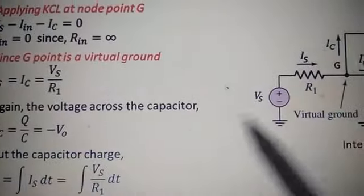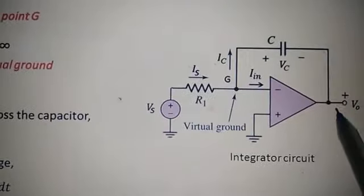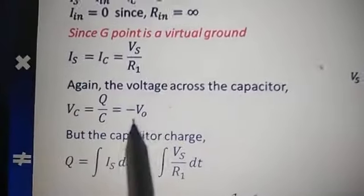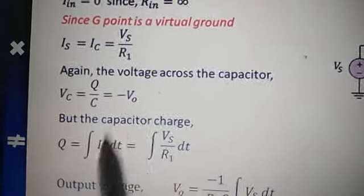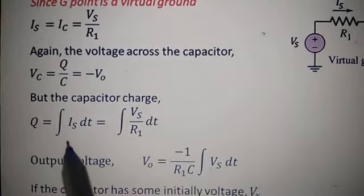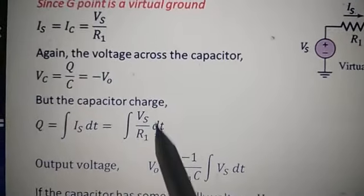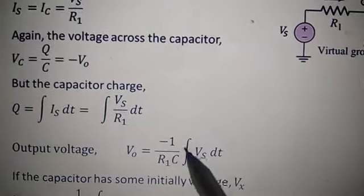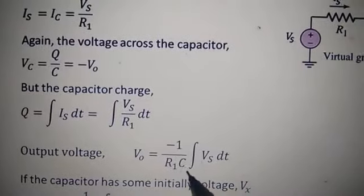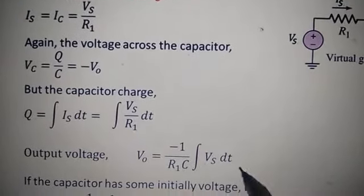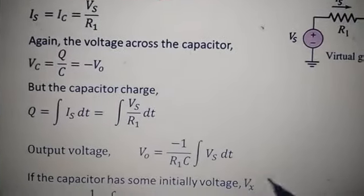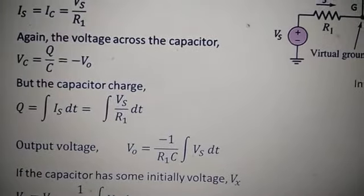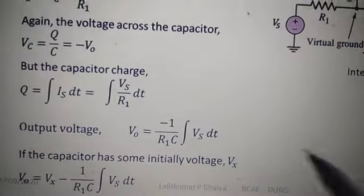Vc = Q/C is equal to minus V0. The capacitor charge Q = integration of Is dt = Vs/R1 dt. Therefore output voltage V0 = minus 1/(R1C) × integration of Vs dt. Taking R1 out, V0 = minus 1/(R1C) × ∫Vs dt.